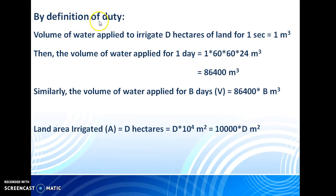By definition of duty, volume of water applied to irrigate D hectares of land for 1 second equals 1 meter cube. For 1 second, the volume of water required equals 1 meter cube. Then, what is the volume of water required for a day? The volume of water applied for 1 day equals 1 times 60 seconds times 60 minutes times 24 hours. So, this is totally 86,400 cubic meters. This is for 1 day, 86,400 cubic meters.